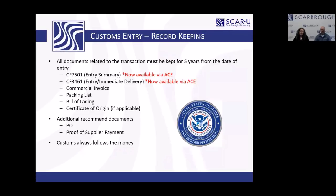A quick slide on record keeping: all documents required for the transaction still have to be saved for five years from the date of entry. With the introduction of ACE, you don't need to have the paper 7501 — the record is the ACE portal. But you will still need to keep your commercial invoice, packing list, bill of lading, and everything else.